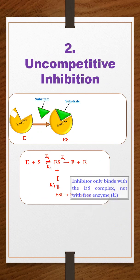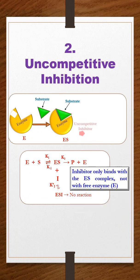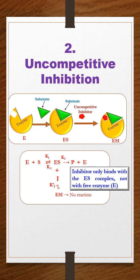In uncompetitive inhibition, the inhibitor only binds with the ES complex, not with the free enzyme. Inhibitor binding to the ES complex makes it more difficult for the substrate to dissociate from the ESI complex or be converted to product.